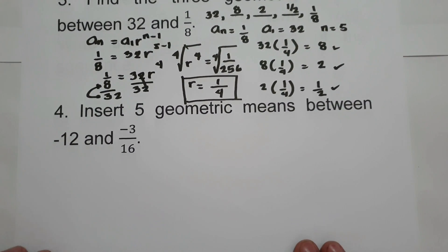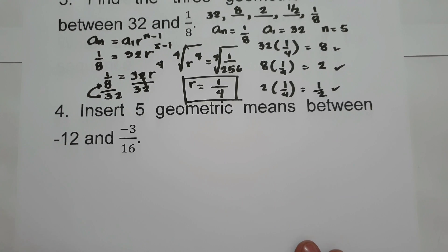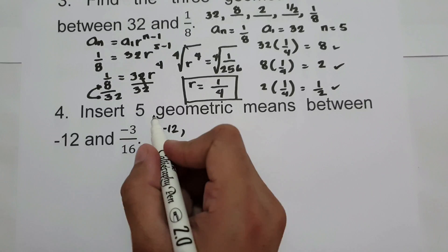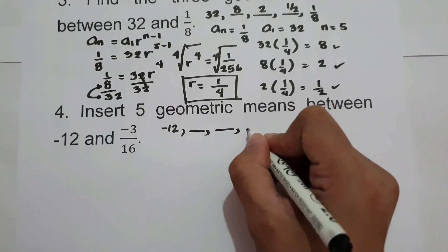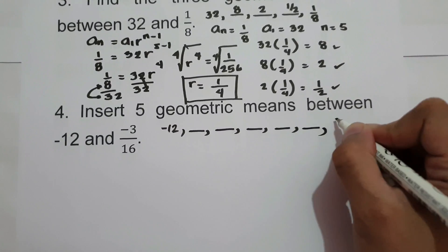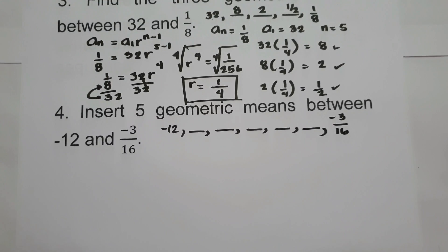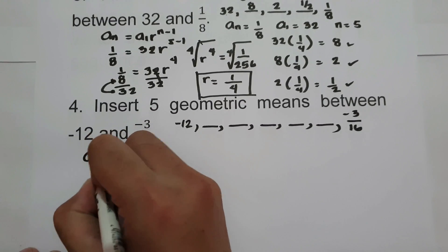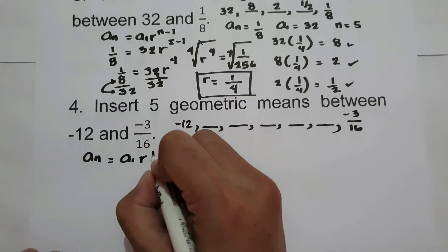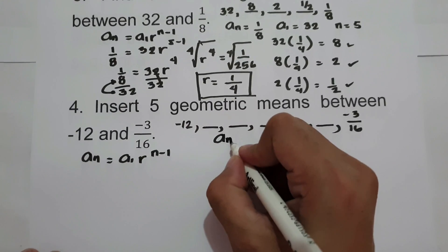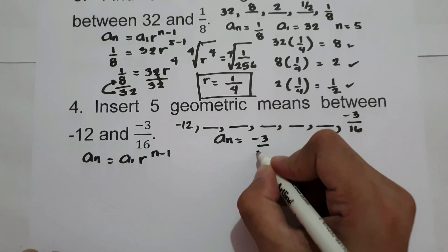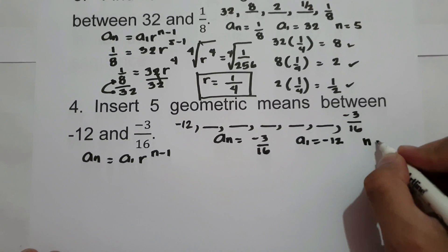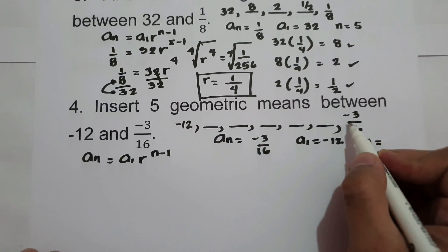For number 4, insert 5 geometric means between negative 12 and negative 3/16. We write the sequence as: negative 12, five blanks, negative 3/16. Using the formula, a_n is negative 3/16, a_1 is negative 12, and n is the number of terms — counting 7 total terms. Substituting: negative 3/16 equals negative 12 times r raised to 7 minus 1, giving negative 3/16 equals negative 12r⁶.